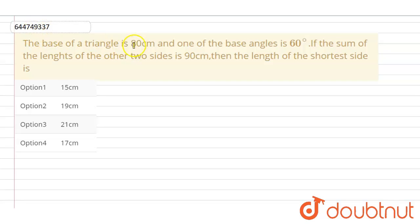The base of a triangle is 80 cm and one of the base angles is 60°. If the sum of the lengths of the other two sides is 90 cm, then the length of the shortest side is.